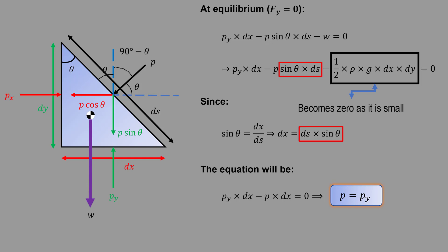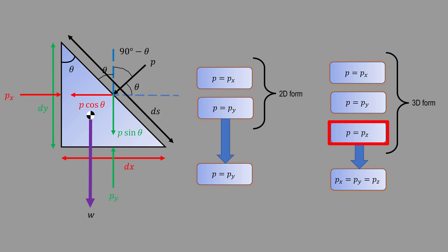With a similar process, P equals Pz. After combining all the results, P equals Px equals Py equals Pz. Hence Pascal's law is proved.